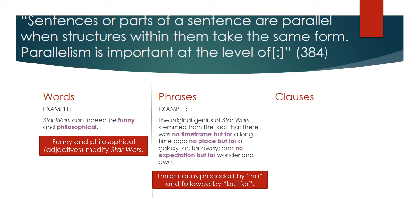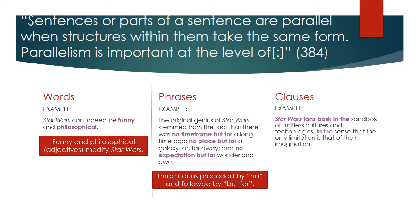The final way we can use and recognize parallel structure is through clauses. The difference between a phrase and a clause is that a clause uses a noun and a verb. Technically, a clause can usually stand alone as its own sentence, although we have two types: dependent clauses and independent clauses. A dependent clause uses a noun and a verb, but it's dependent upon what comes before or after it to make a complete sentence. Let's look at two examples — the first will have dependent clauses. It reads: 'Star Wars fans bask in the sandbox of limitless cultures and technologies, in the sense that the only limitation is that of their imagination.'